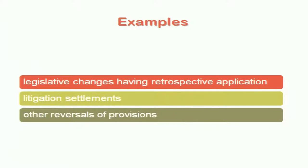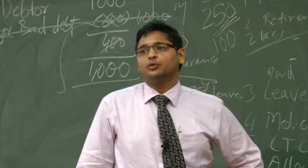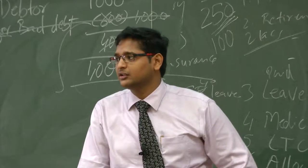Any regulatory change with retrospective application that has a material impact on the current income and expenditure account should be disclosed separately. Any litigation settlements — where a court case going on against a party or filed by you has settled — that is an exceptional item and should be disclosed separately. Any reversal of a provision which is material is also an exceptional item.